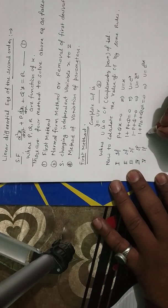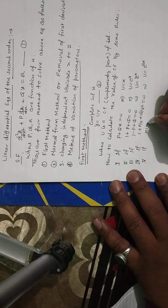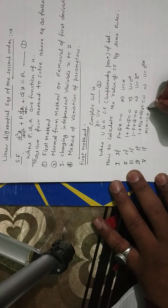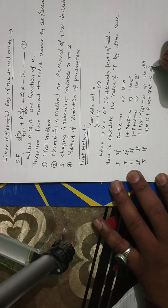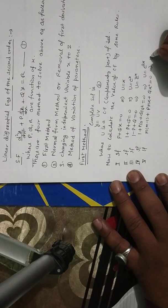Rule number five: if m(m−1) + Pmx + Qx² = 0, then u = x^m.